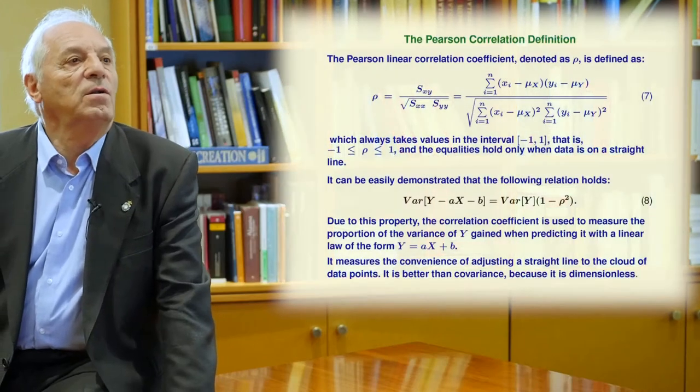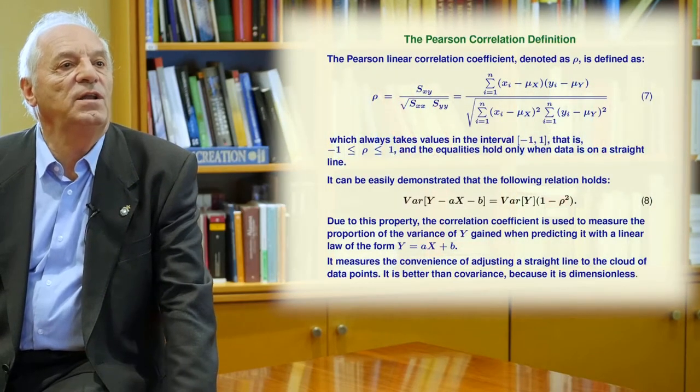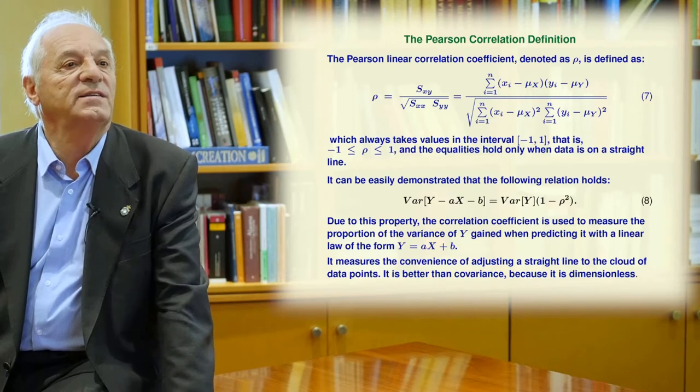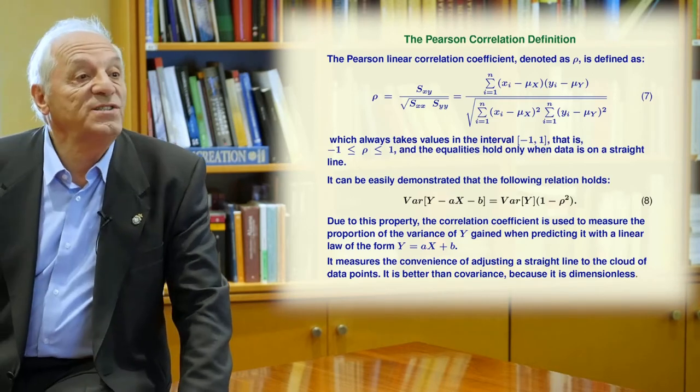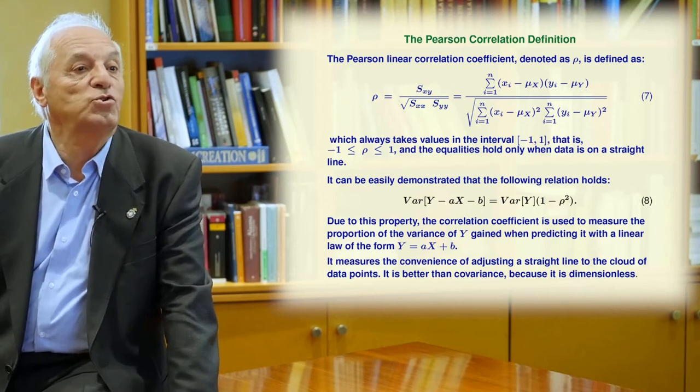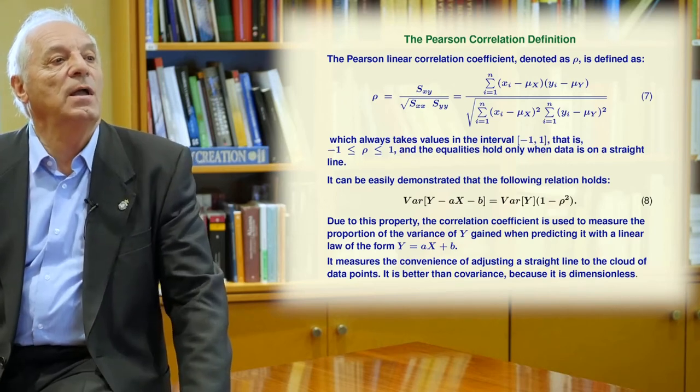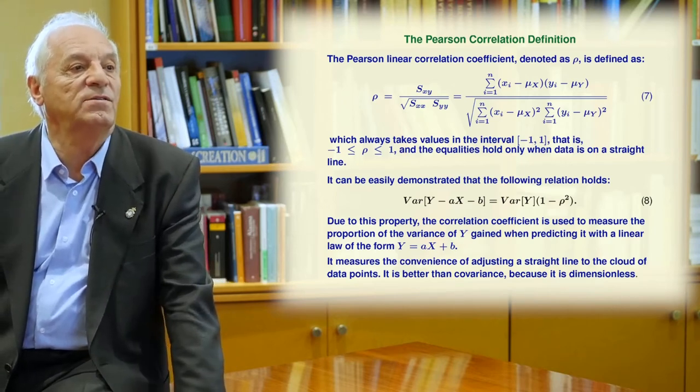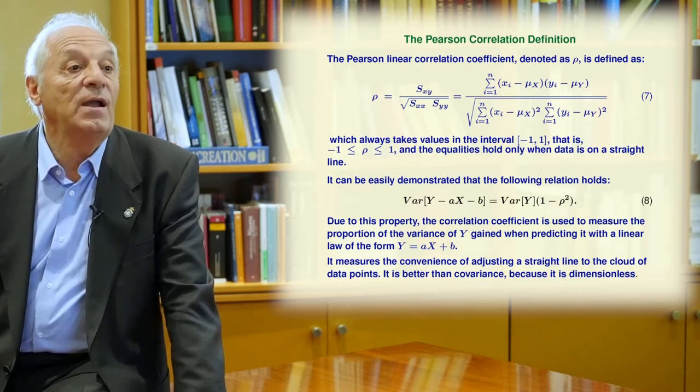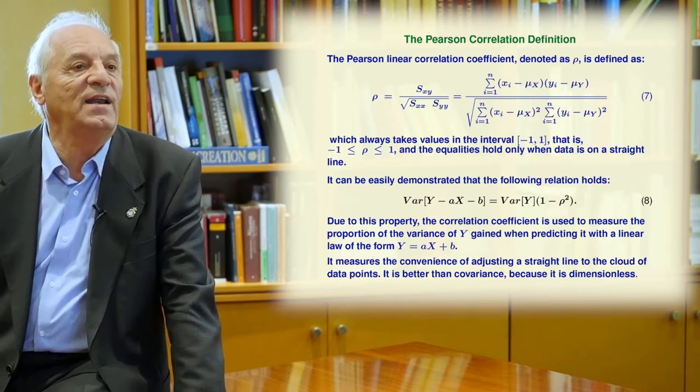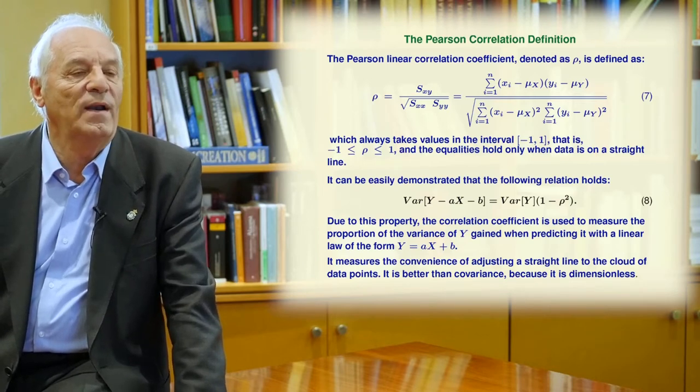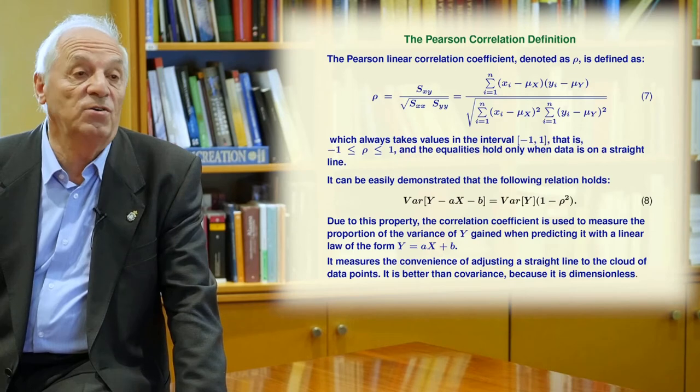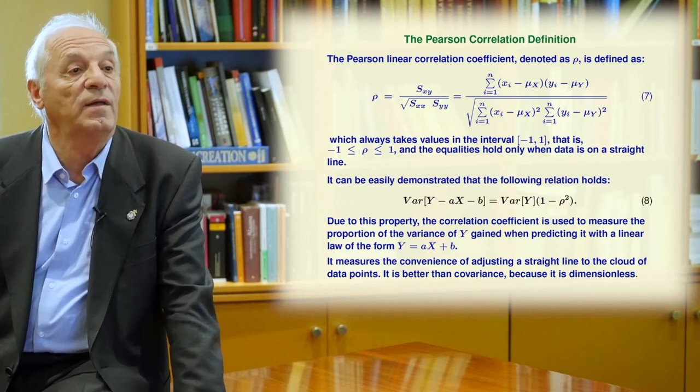The Pearson linear correlation coefficient, denoted as rho or r, is defined in expression seven, which always takes its values in the interval minus one to one. That is, minus one less than or equal to rho less than or equal to one. The equalities hold only when data is on a straight line. If all the data is on a straight line, then you have one or minus one. If the data is not on a straight line, then you have a different value.